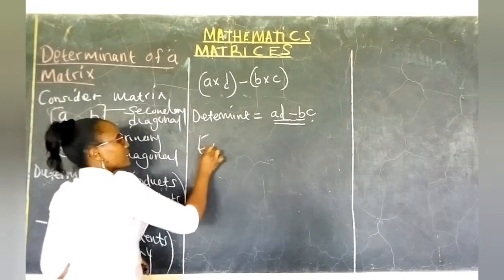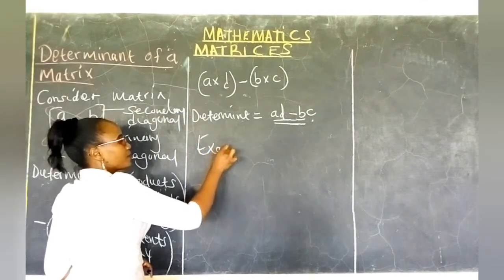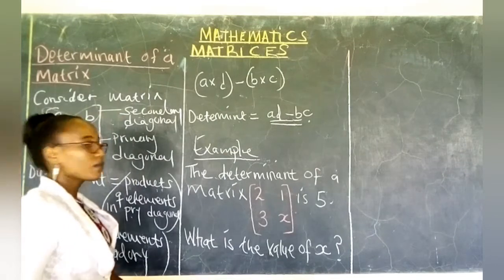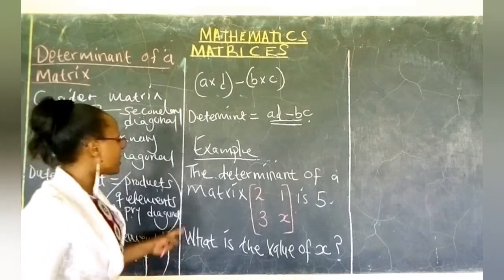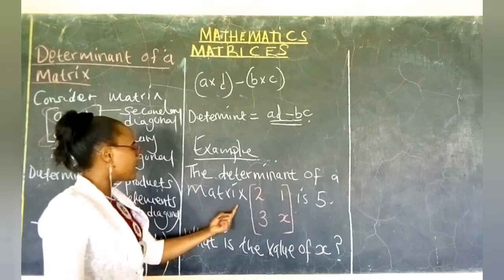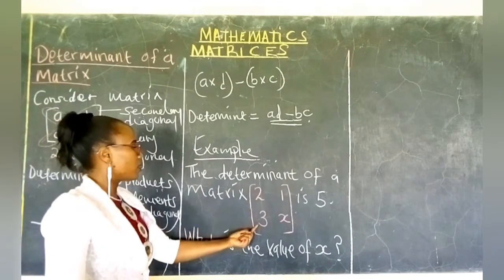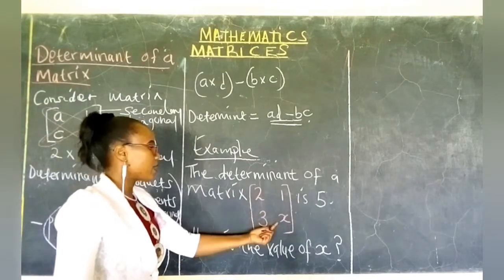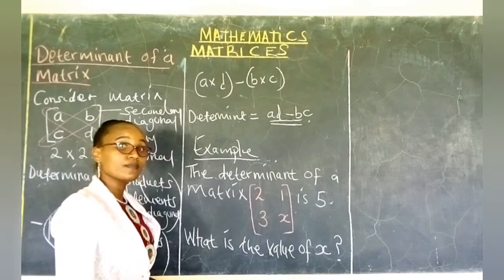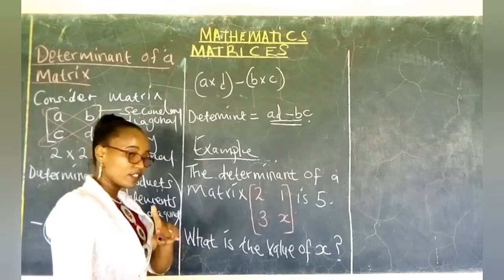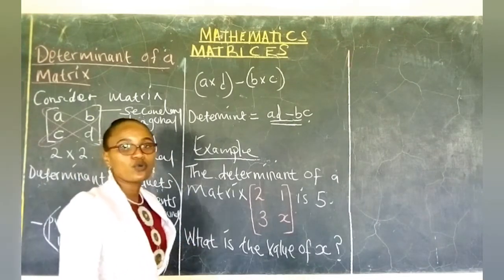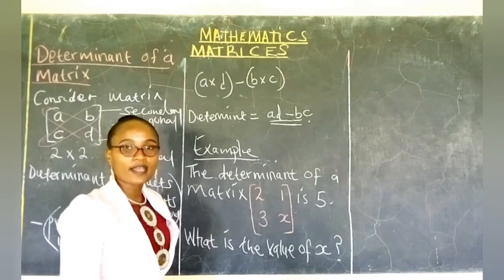Let us look at an example. In this example, we are told the determinant of a matrix with entries 2, 3, 1, X is 5. What is the value of X?